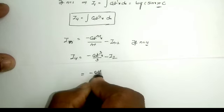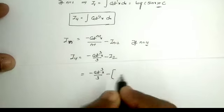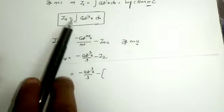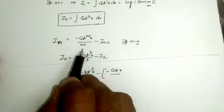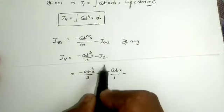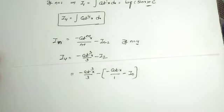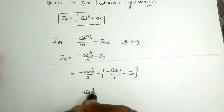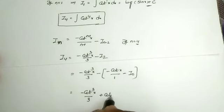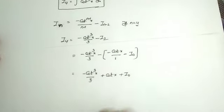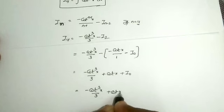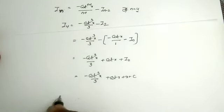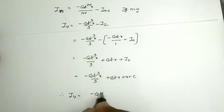Now to find I_2, replace n equals 2 in the formula: I_2 equals minus cot^(2-1) x divided by (2-1) minus I_(2-2), which gives minus cot x divided by 1 minus I_0. Substituting back: I_4 equals minus cot^3 x divided by 3, minus of (minus cot x minus I_0), which gives minus cot^3 x divided by 3 plus cot x plus I_0. Replacing I_0 with x, the final answer is minus cot^3 x divided by 3 plus cot x plus x plus C.